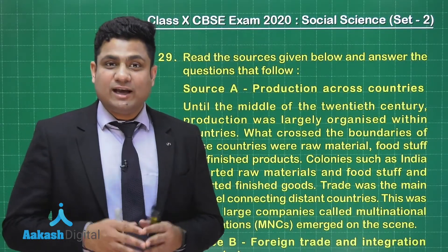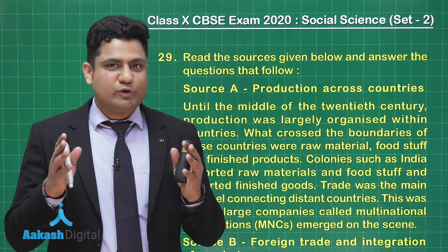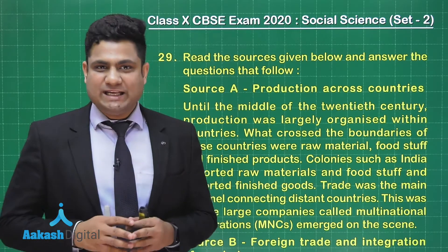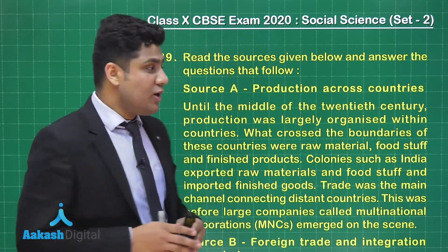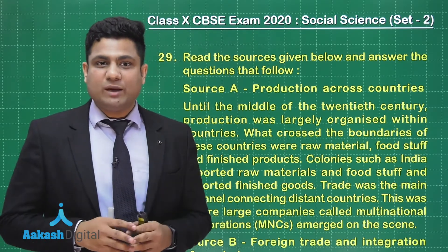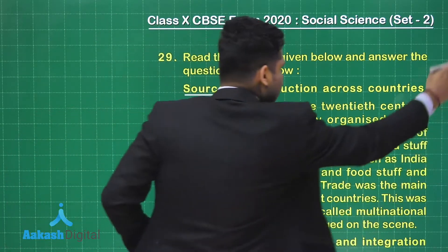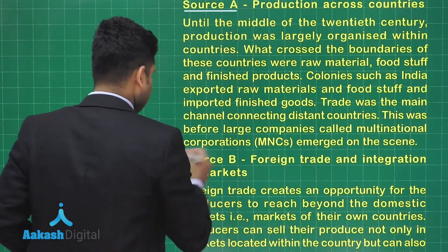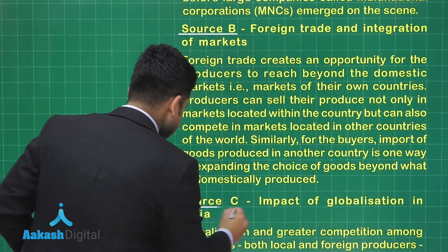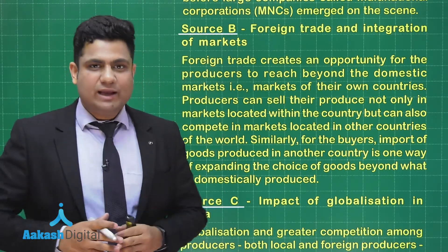Let's start with Section C. In this, we'll be dealing with six questions, that is, question number 29 to question number 34. These questions will be carrying five marks each. So let's start with question number 29. Question number 29 is again a paragraph-based question in which we have been provided three sources: source A, source B, and source C. Let's take each source one by one and deal with the given question.